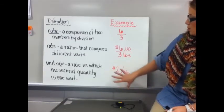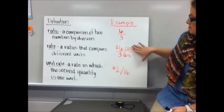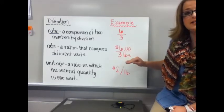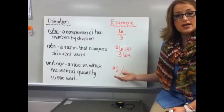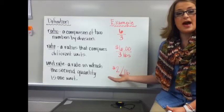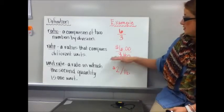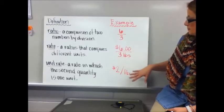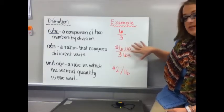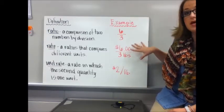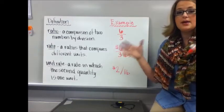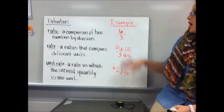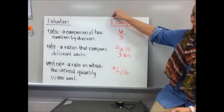To find that unit rate, what you do is divide the top by the bottom. Think of that fraction line as a division symbol. What's happening is you're actually taking those six dollars and splitting them up into three separate pounds, and when you do that you're paying two dollars per pound.